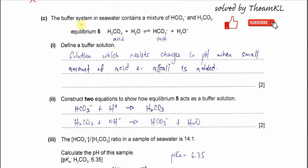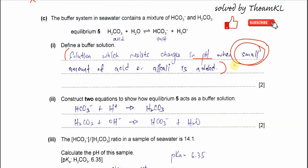Part C: the buffer system in seawater contains hydrogen carbonate and carbonic acid. This is the equilibrium where the acid with water forms hydrogen carbonate and the hydrogen ion. Part one — define a buffer solution. A buffer is a solution which resists the change in pH when a small amount of acid or alkali is added.